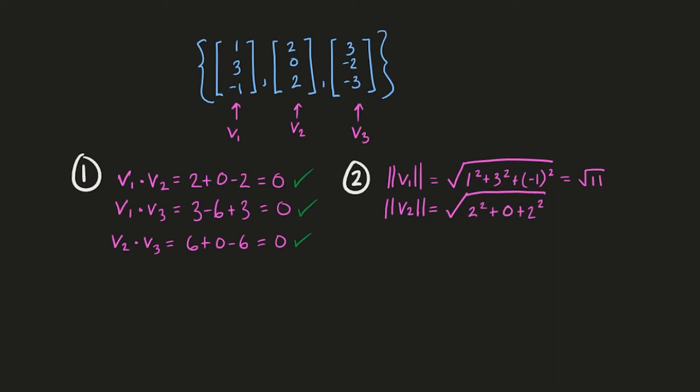Now doing it for v2, we end up with the square root of 8. And then the length of v3 here is 3 squared plus negative 2 squared plus negative 3 squared, which is the square root of 22.